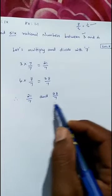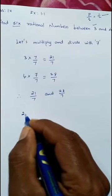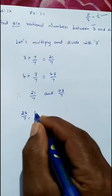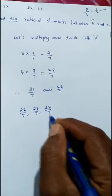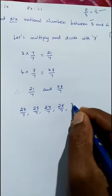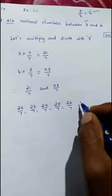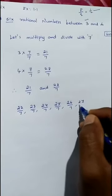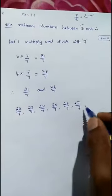Now see, your denominators are equal, so it is a like fraction. So you can write: first number 22 by 7, 23 by 7, 24 by 7, 25 by 7, 26 by 7, and 27 by 7. So 1, 2, 3, 4, 5, 6 are the...